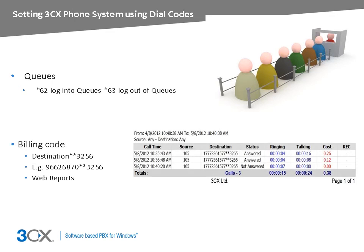Billing codes are useful when you want to tag calls with a particular code. These come in handy when you perform calls for a job and want to bill the calls to that job. You can then generate reports for each billing code. The dial code for billing codes is star star — dial the number first, followed by star star and the billing code. You can then use the 3CX web reports to generate reports for your billing codes. Note that your extension must be granted access to the 3CX web reports by your administrator.